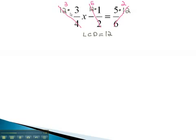Now all that remains are these little multiplication problems in the numerators. 3 times 3x is 9x, minus 6 times 1 is 6, equals 5 times 2, which is 10.